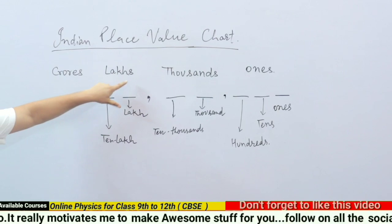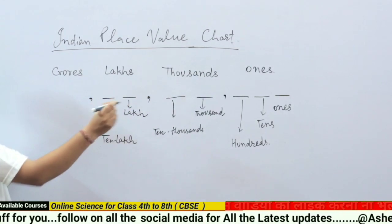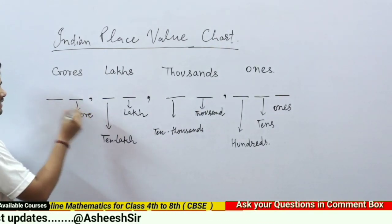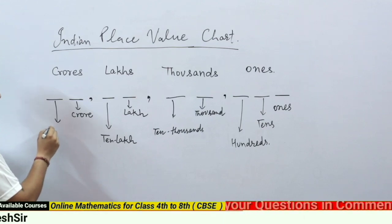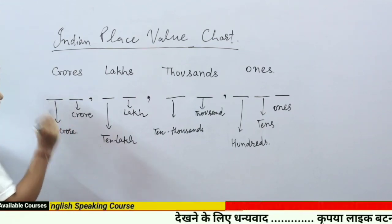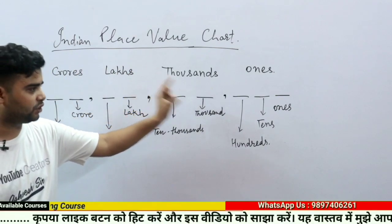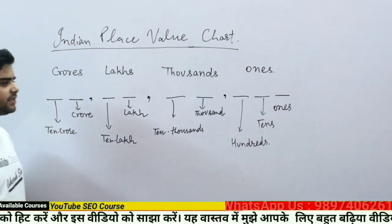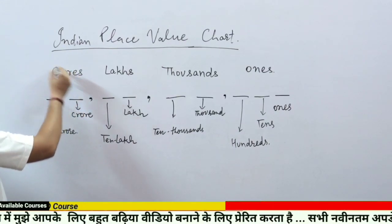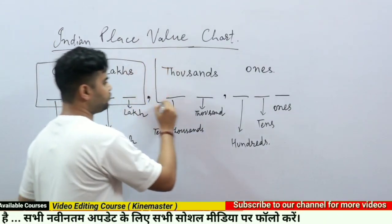Similarly, Lakhs is divided into two parts: the first part is called Lakh and the second part is called Ten Lakh. Crores is also divided into two parts: the first part is called Crore and the second part is called Ten Crore. This is the Indian place value chart.